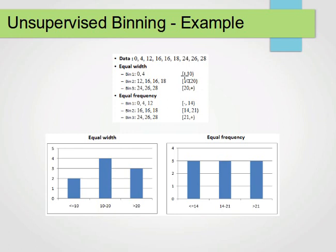We split the data into three categories with boundaries at multiples of 10. For the first bin (below 10), we have 0 and 4. For the second bin (10 to 20), we have 12, 16, 16, and 18. For the third bin (20 to 30), we have 24, 26, and 28. That's equal width binning.